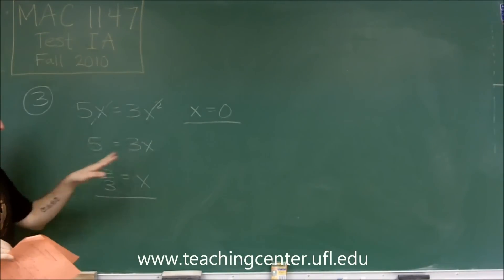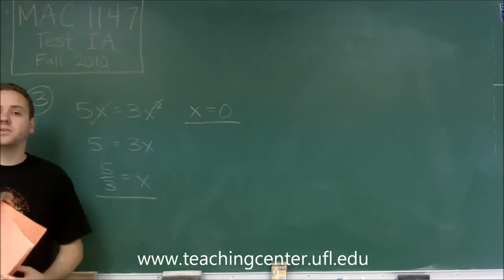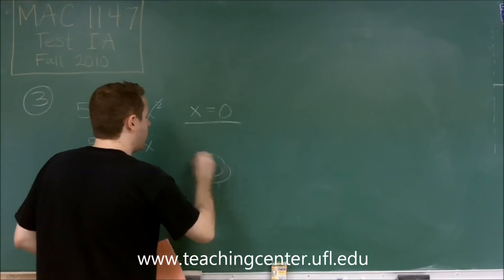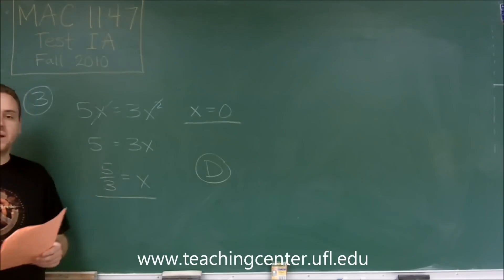A lot of people skip this step and go straight to canceling. But by canceling out, you are saying that there could have been a solution of 0. So we have answer choice D. We have two solutions, both 0 and 5 thirds.